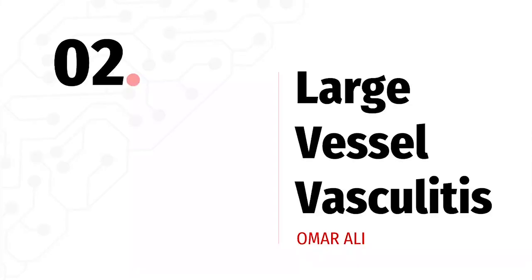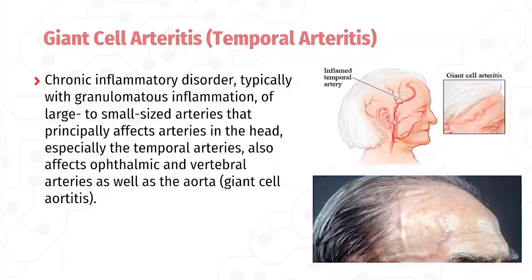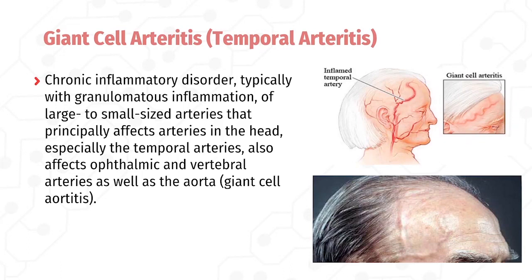My name is Omar Ali and I will talk about large vessel vasculitis. The two major categories are giant cell arteritis and Takayasu arteritis. Giant cell arteritis, also called temporal arteritis, is the most common form of vasculitis in the elderly. It is a chronic inflammatory disorder typically with granulomatous inflammation of large to small sized arteries, principally affecting the arteries in the head — especially the temporal arteries — as well as the ophthalmic and vertebral arteries and the aorta.